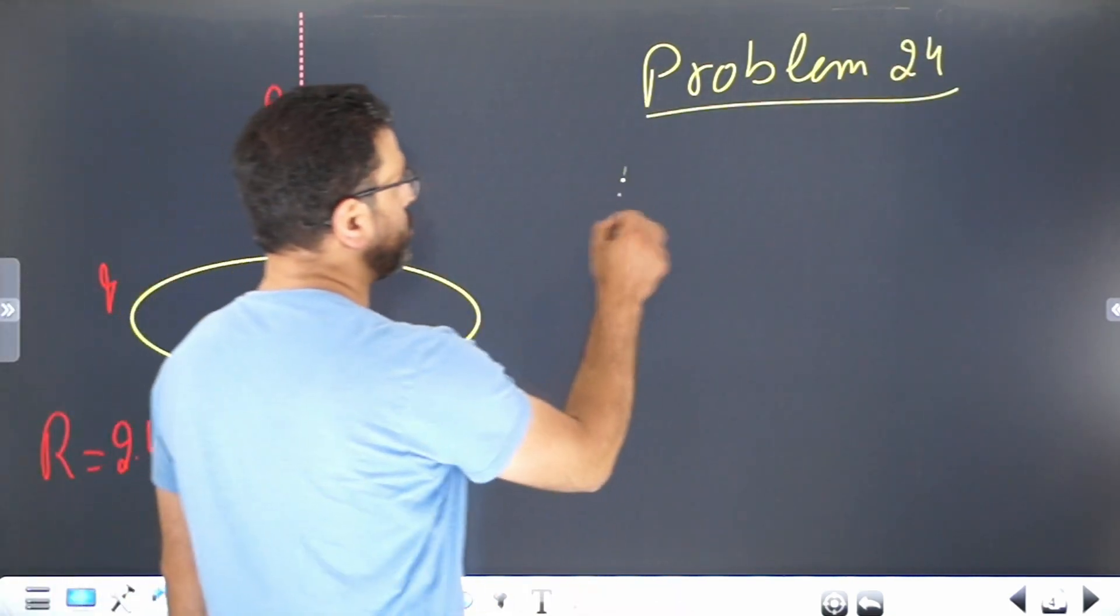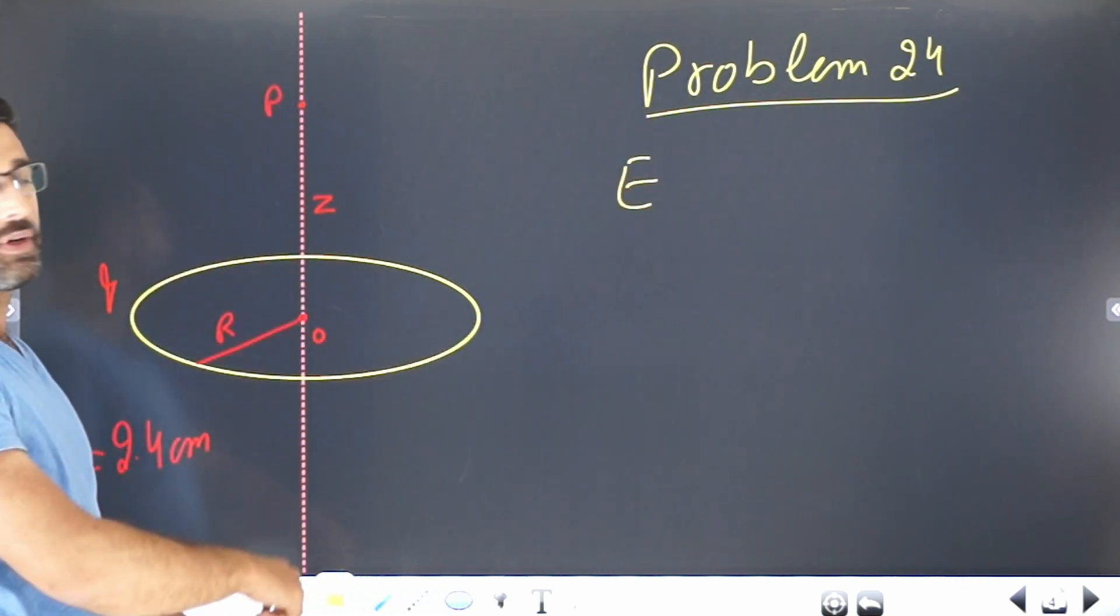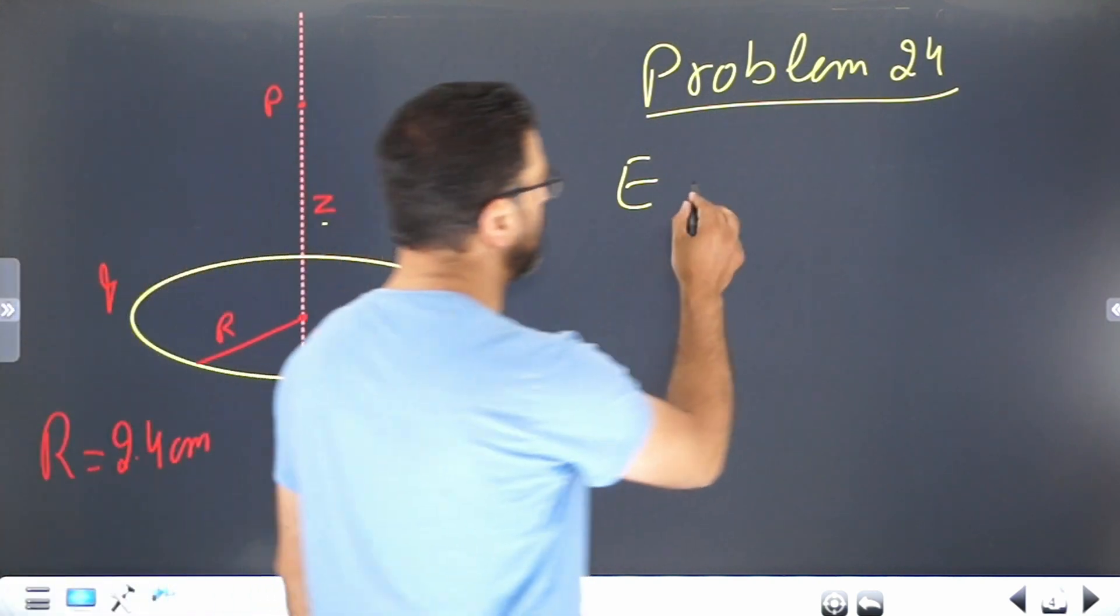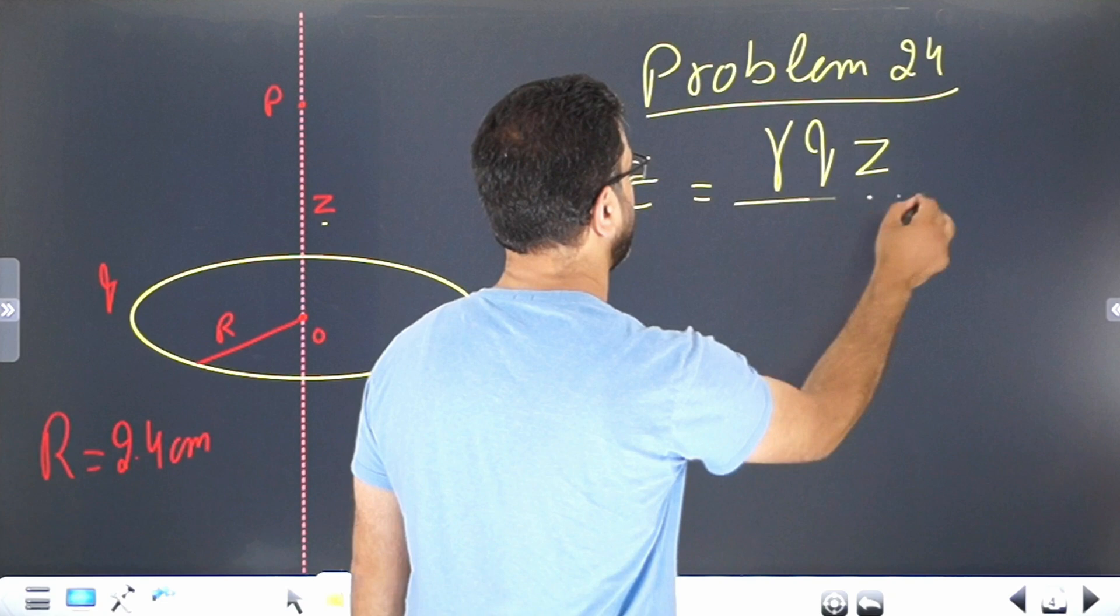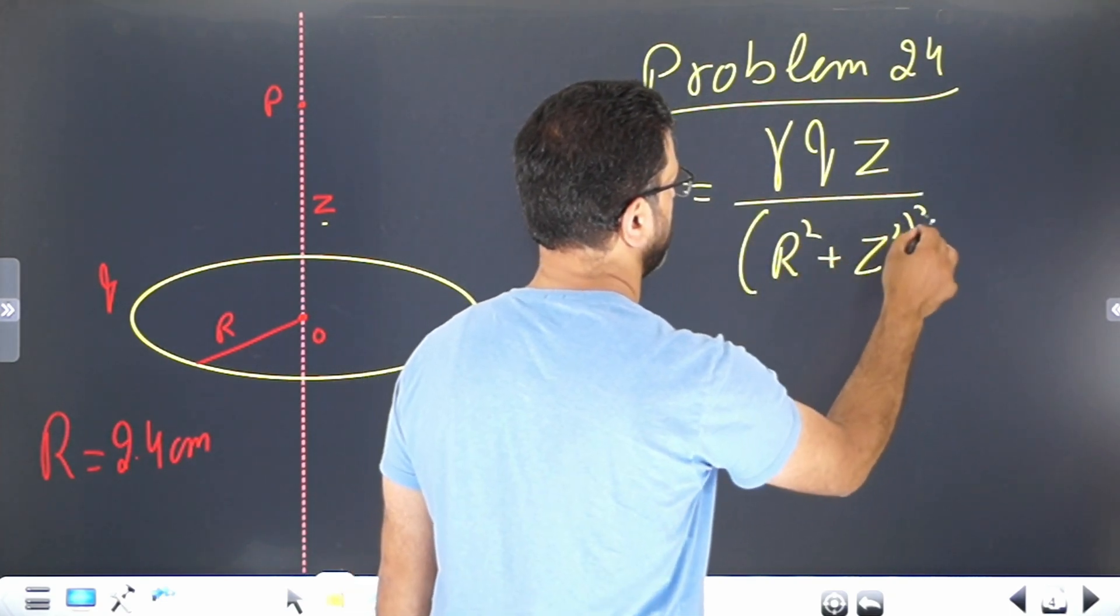In that problem we saw that the field on the axis of the ring, at a distance z from the center, the field is equal to gamma q z divided by (r squared plus z squared) to the power 3 by 2.